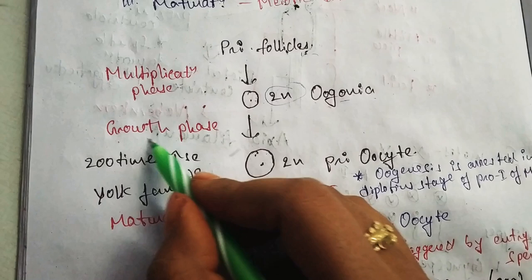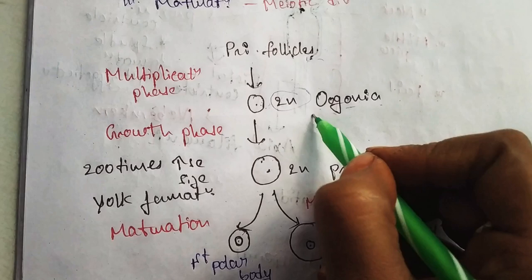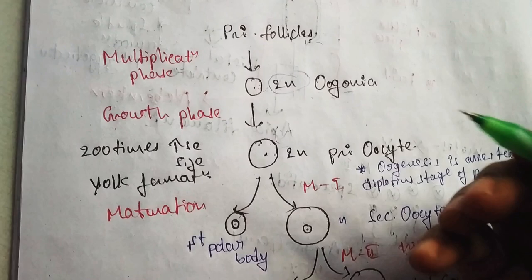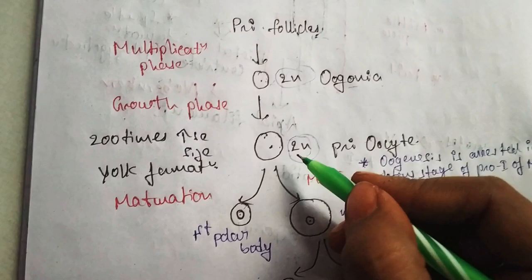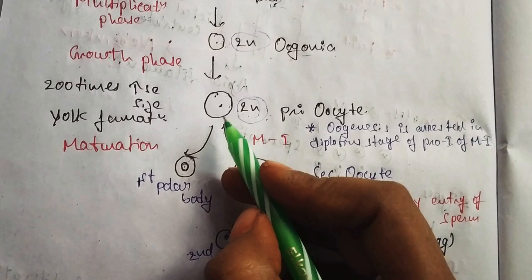Then the growth phase occurs. During the growth phase, the oogonia increase their size 200 times by utilizing more nutrients. It remains diploid, so two sets of chromosomes are still present in the cell. These become primary oocytes.